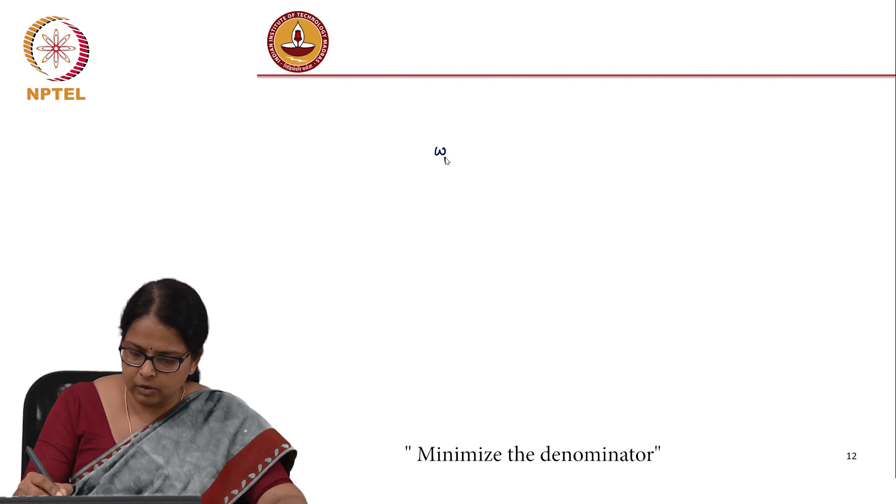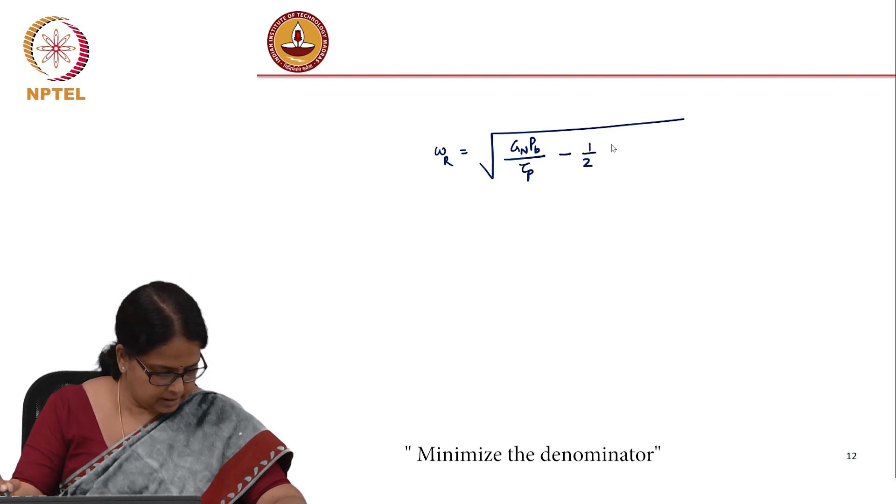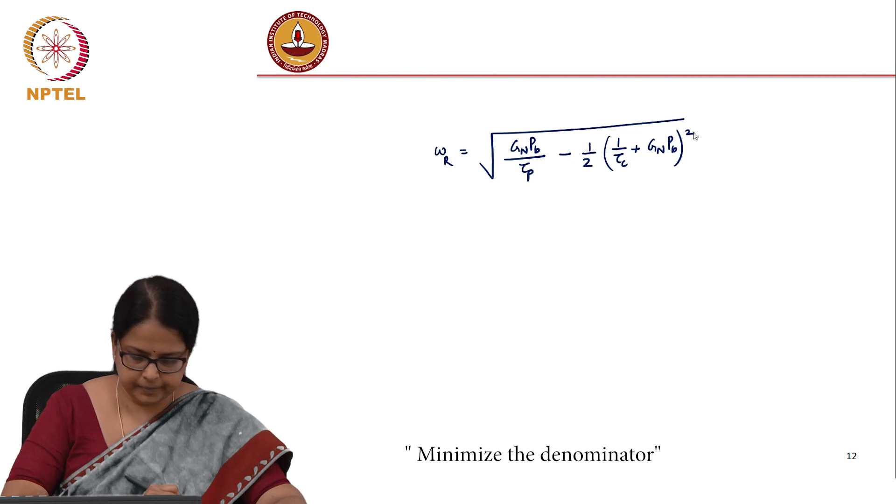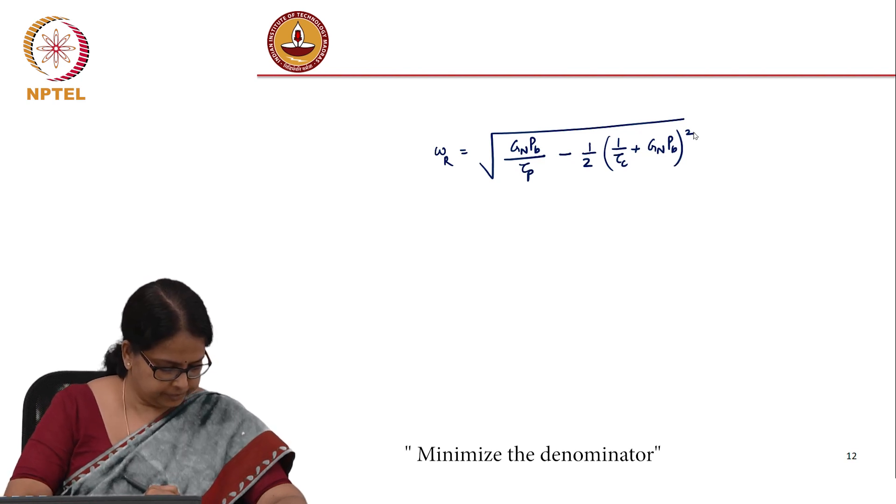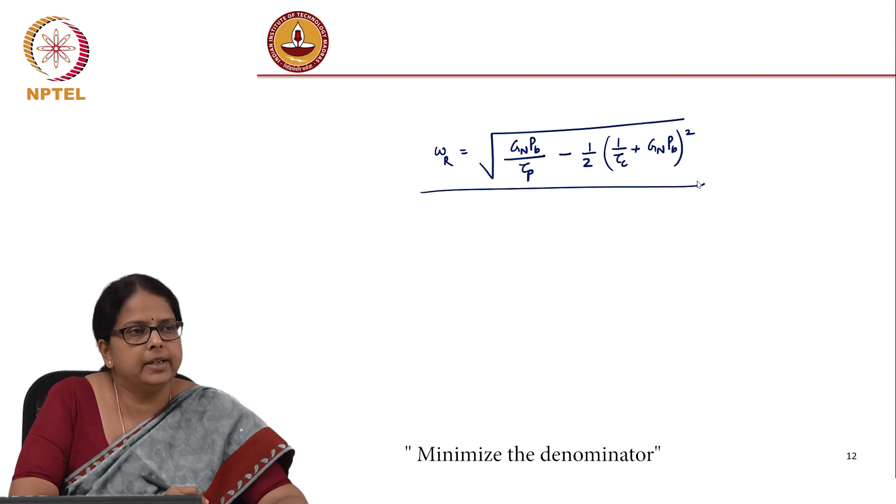And that will turn out to be square root of (g_n*p_b/tau_p) minus half of (1/tau_c + g_n*p_b). Verify it as an exercise.